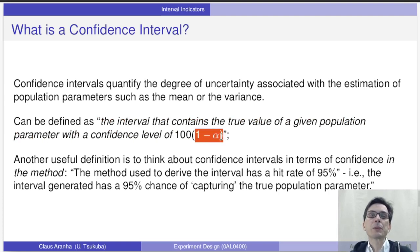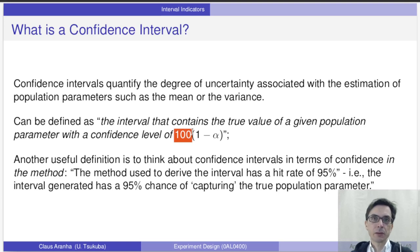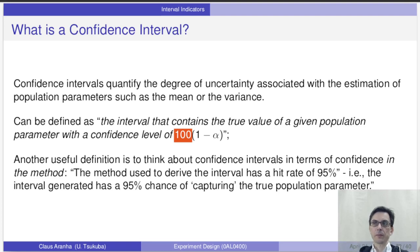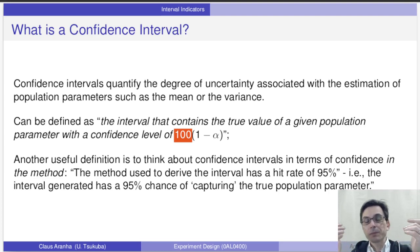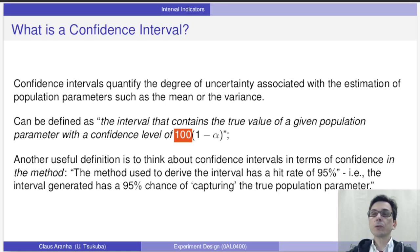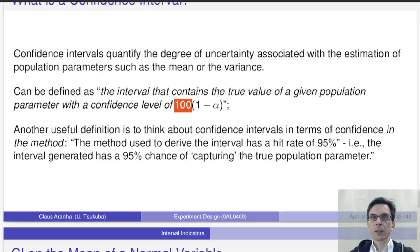When alpha is large, our confidence interval will be less precise — we have less confidence. When alpha is small, our confidence interval will be more precise — we have more confidence that the true value is inside the interval. So how do we calculate this confidence interval?